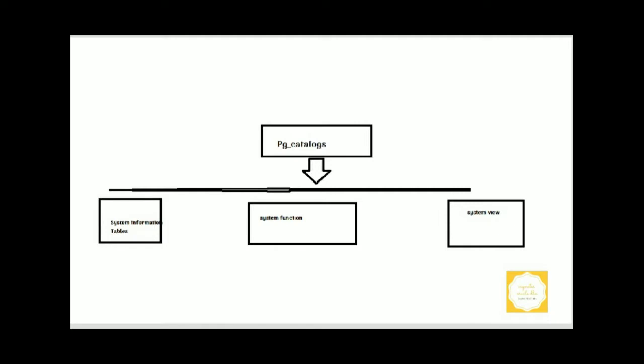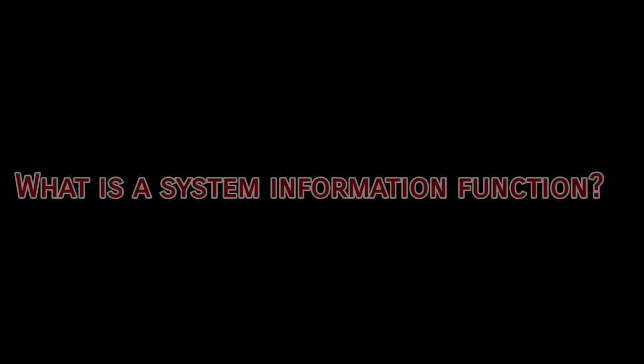We have already discussed system information tables in detail. Now we are going to see the system functions, which provide the information to access and change information. The system functions contain two types: one is the system information function, and another is the system administrative function. Now we are going to see the system information function in detail.